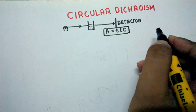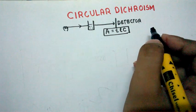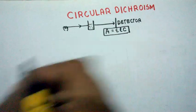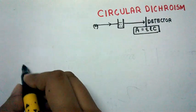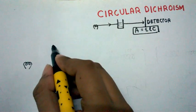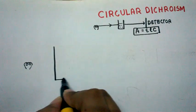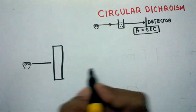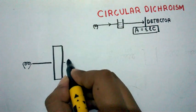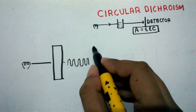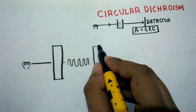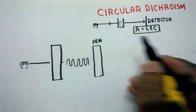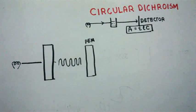Our circular dichroism spectroscopy is quite similar, except that instead of any kind of light we use polarized light. Here we have a light source and a polarizer — a substance which polarizes the light. When light passes through the polarizer it becomes polarized. When it then crosses a PEM (photoelastic modulator), it is converted into two types of light.